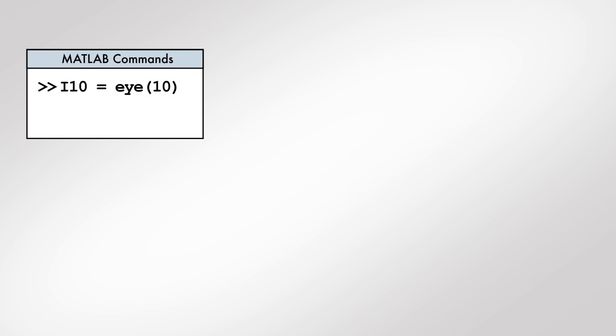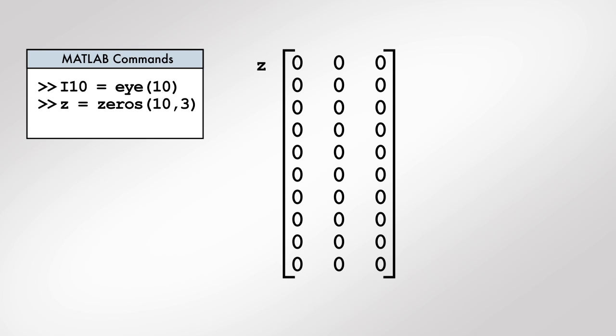Contrast the command that creates i10 with this command that creates a 10 by 3 matrix of zeros. The first input specifies the number of rows in the matrix of zeros, and the second input specifies the number of columns.